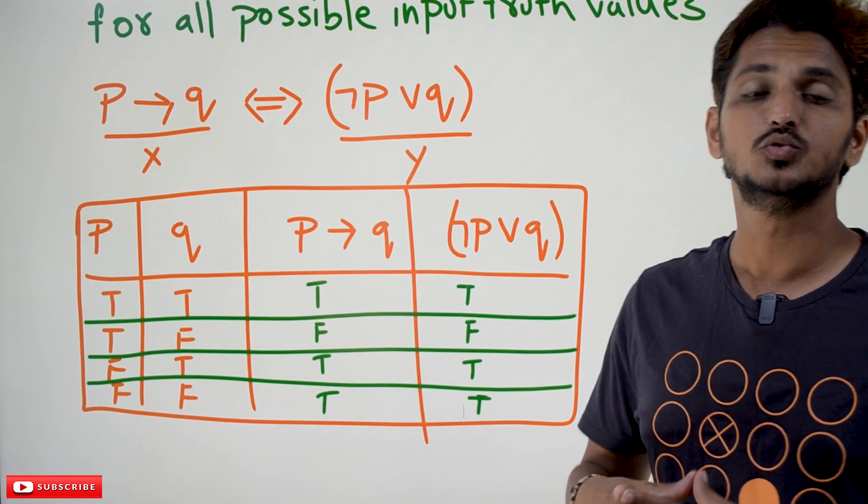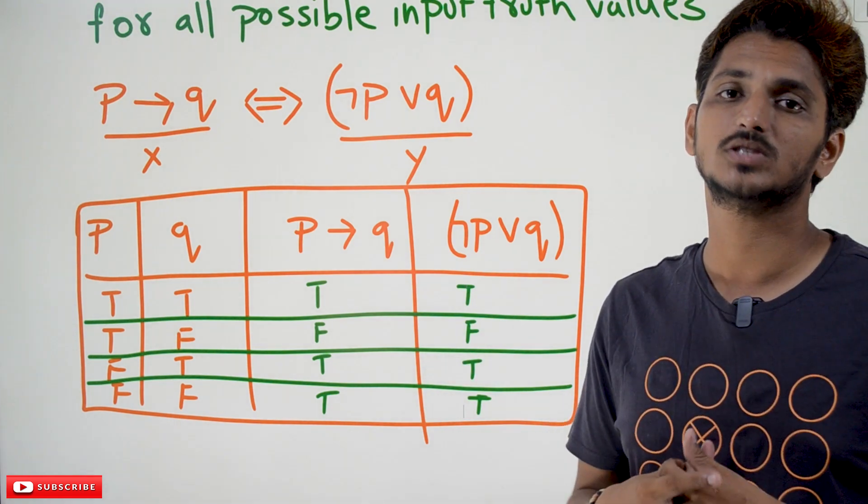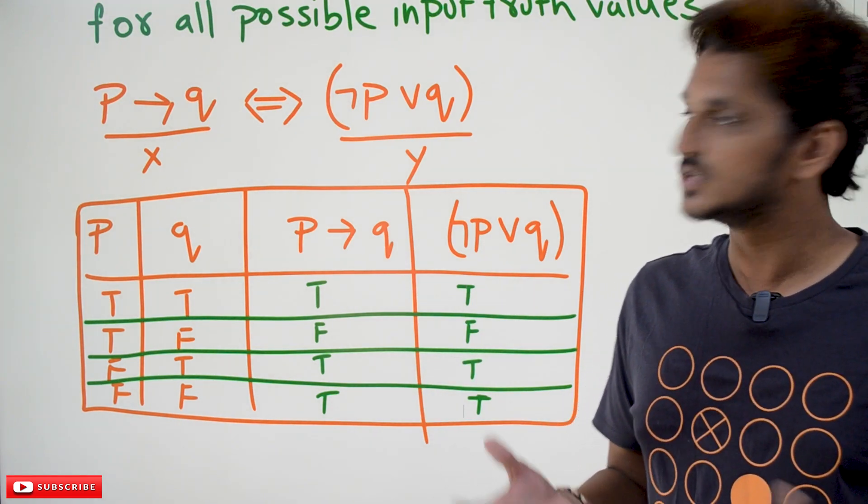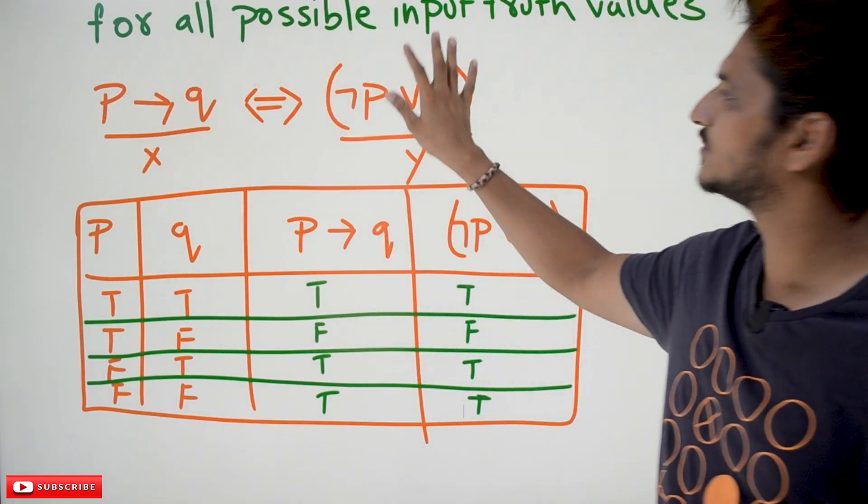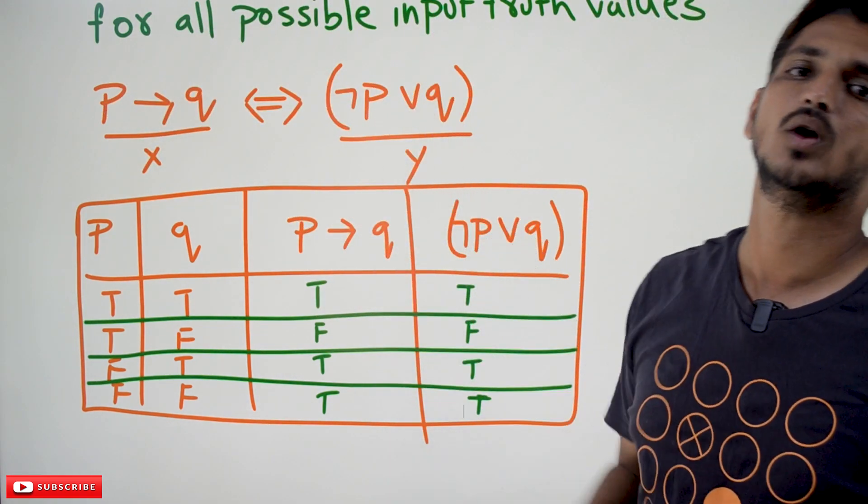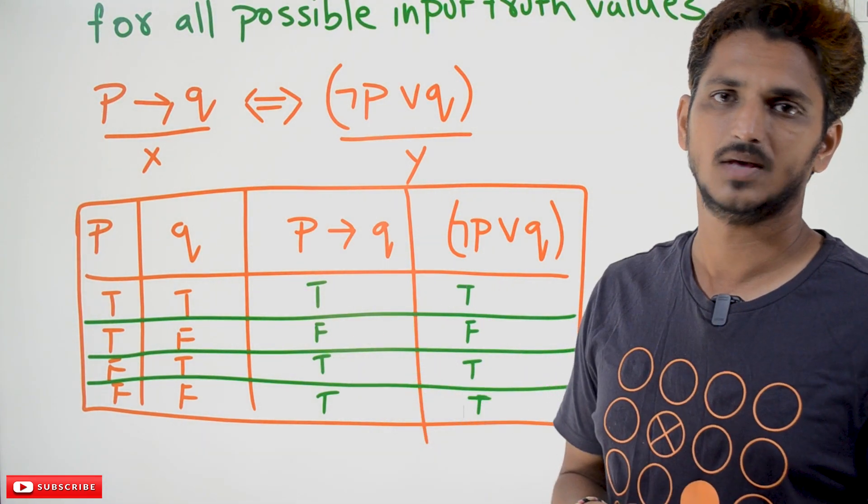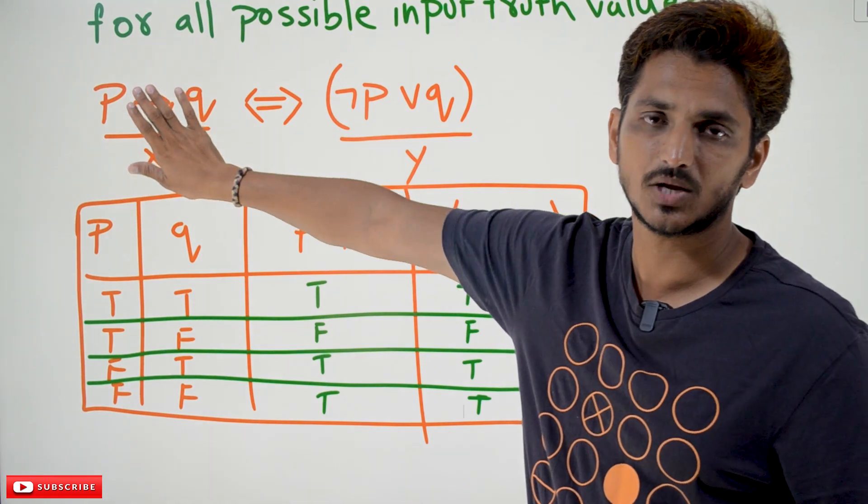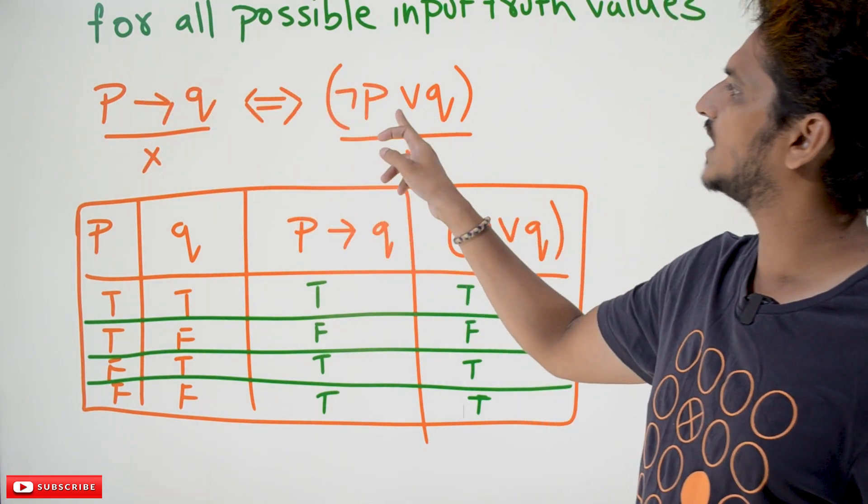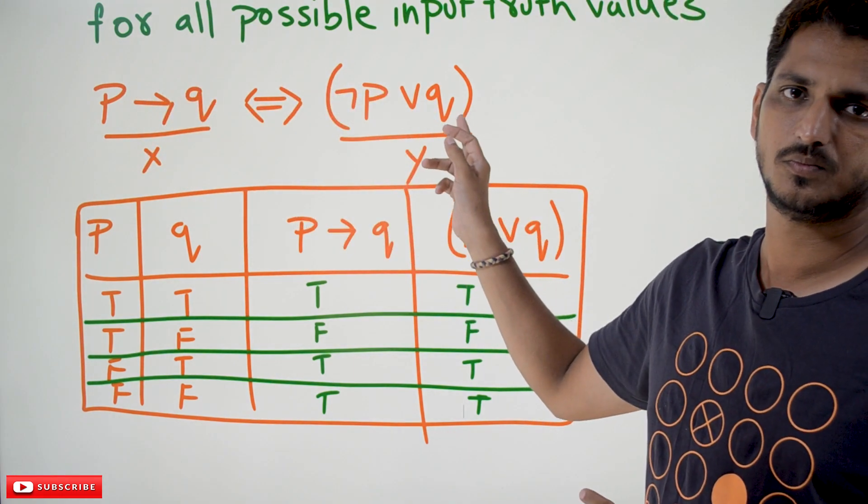Then we say that these two equations, these two propositions are equal. Means instead of using this proposition, you can use this proposition. This is the point you need to understand. We are going to use this in our coming classes. Instead of using this proposition, P implies Q, you can go with the negation P or Q. Both are same.